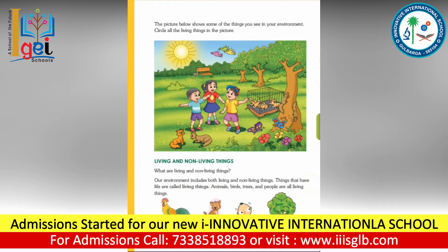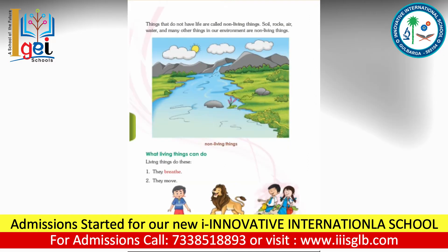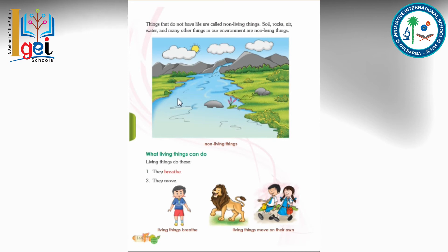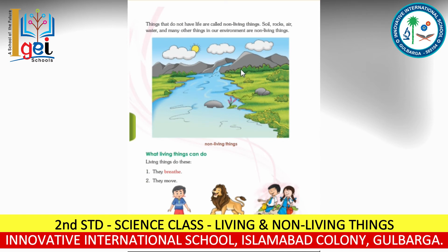Next, go to page 144. Things that do not have life are called non-living things — that is, soil, rock, air, water, and many other things in our environment. In this picture you can see the non-living things: the rocks, the water, and the air are all non-living things.